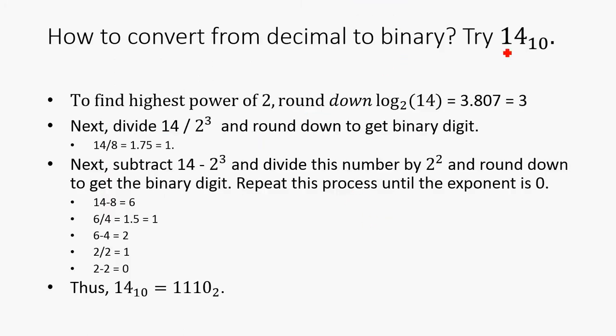So how do we convert from decimal to binary? Let's try 14. Well to find this, we first find the highest power of 2, so we know how many digits we're having. So we're going to round down log base 2 of 14, which is going to be about 3.807, which is 3. Which means we're going to have 4 digits in our number, because the lowest one is 2 to the 0.